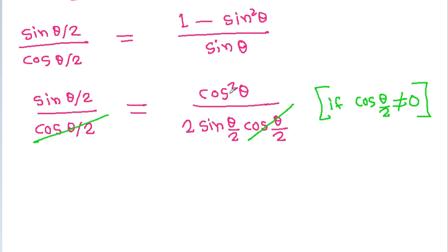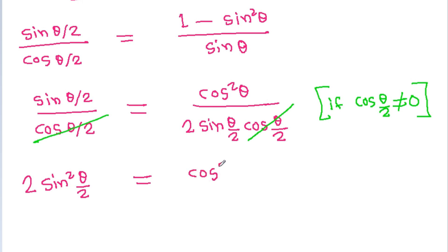If we cross multiply, then we get 2·sin²(θ/2) is equal to cos²θ.